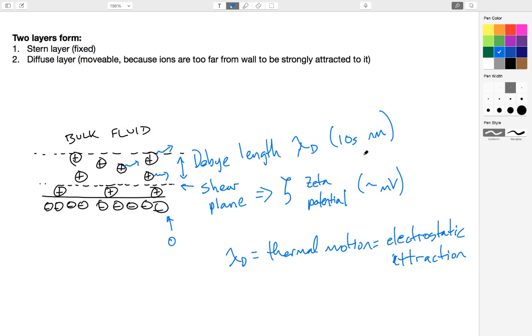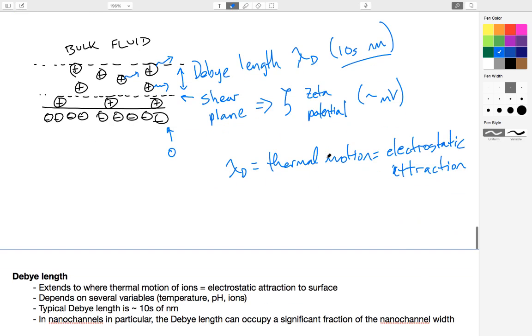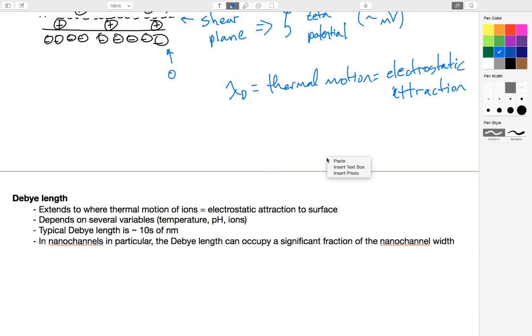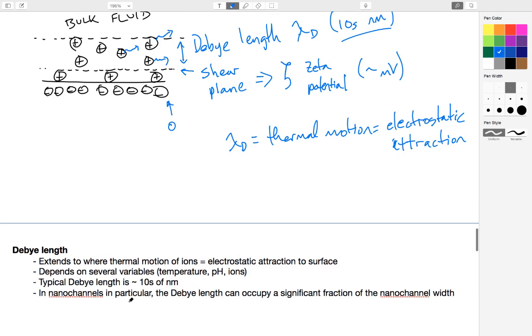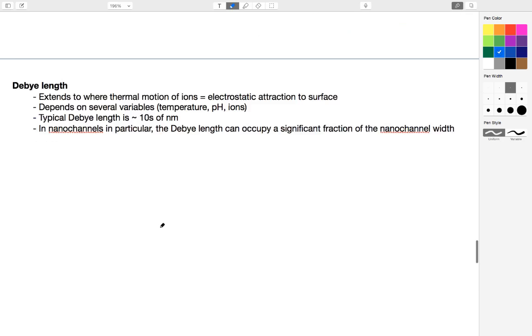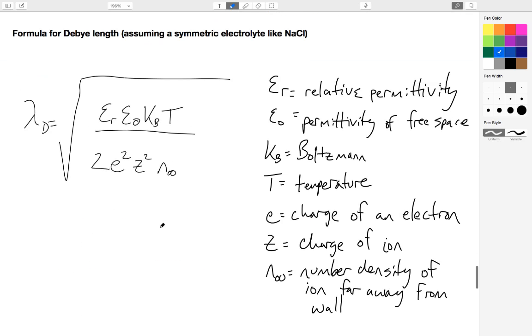So it is well within the scale or size regime of nanochannels, much larger than ions, though, of course. And the reason it's significant is because in nanochannels, the Debye length can occupy a significant fraction of the total nanochannel width. And this has important implications in electrokinetic flow, as we'll see in another video. Now, if you want to calculate the Debye length, these bullet points just summarize what I've just told you. If you want to calculate the Debye length, you can use this formula.